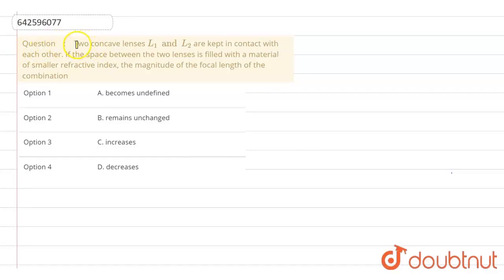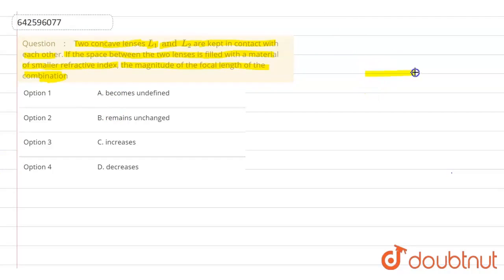In this question, two concave lenses L1 and L2 are in contact with each other. If the space between the lenses is filled with a material of smaller refractive index, we have to find whether the magnitude of the focal length of the combination will increase, decrease, or remain constant. Let us draw the diagram first.